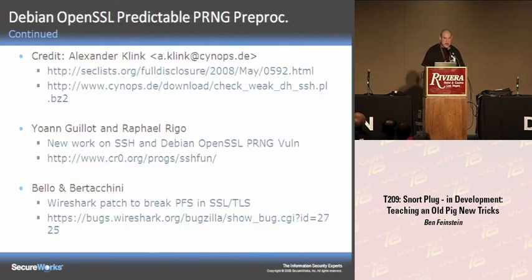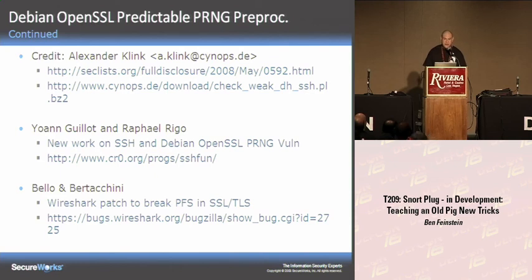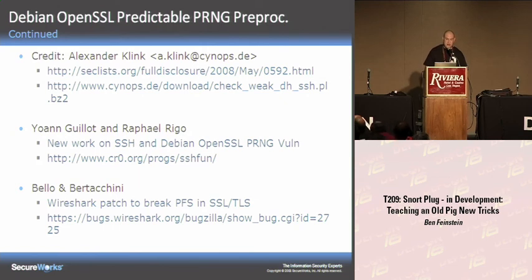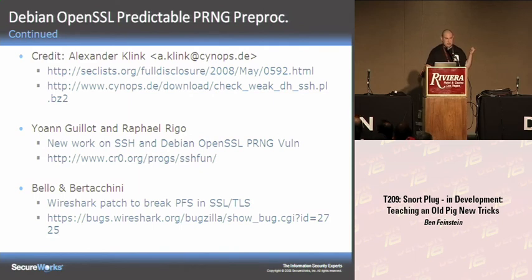I have to note this may be crypto-analytic software which may have some export controls. I want to give props to the people who really came up with this stuff. Bello and Bertaccini are speaking tomorrow afternoon. Alexander Klink at Cynops GmbH in Germany posted a proof-of-concept Perl script to Full Disclosure using GNU multiple precision libraries to attempt to brute-force the SSH Diffie-Hellman key exchange. And Luciano and his colleague have posted patches to Wireshark that break the perfect forward secrecy of TLS and SSL — there's a link to a post on the Wireshark bugzilla.